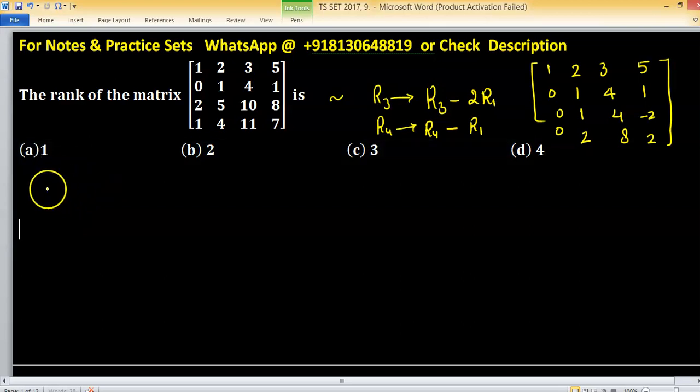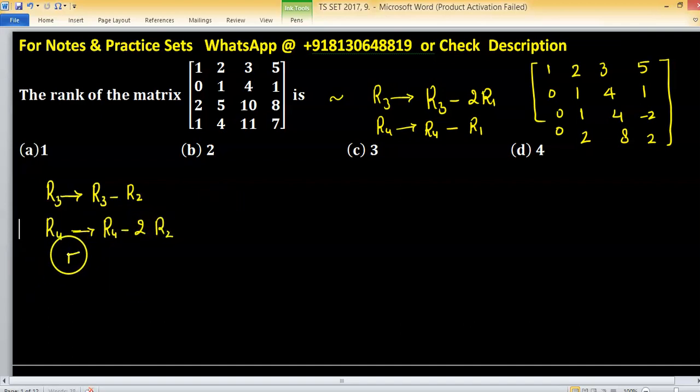Now apply R3 as R3 minus R2 and R4, change in R4 as R4 minus 2 times R2. Apply these two row operations simultaneously.